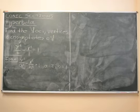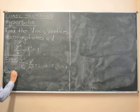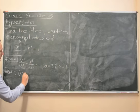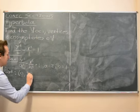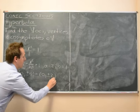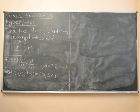So that tells us that the vertices are going to be at (0, plus or minus a), which is at (0, plus or minus 2).